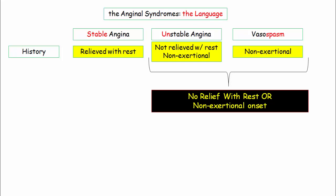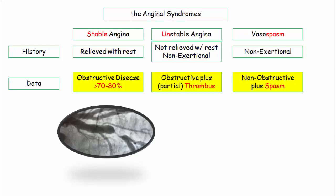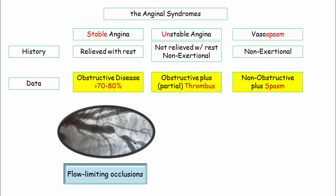Having covered the broad differential of chest pain disorders, let's turn our attention to the anginal syndromes. The history will be a key component in identifying the correct syndrome. The distinction between pain relieved with rest and either non-exertional pain or pain not relieved by rest is vital language for correct categorization. The patient with stable angina — pain relieved by rest — is a patient who has obstructive or occlusive coronary disease with flow-limiting lesions.